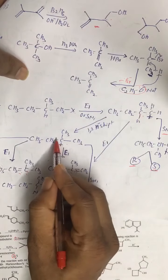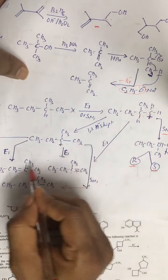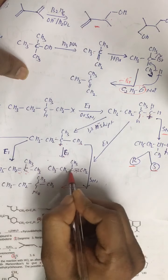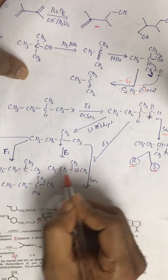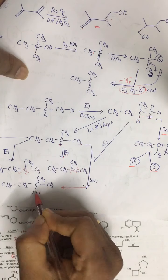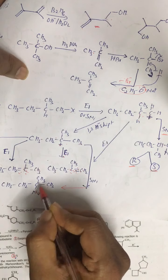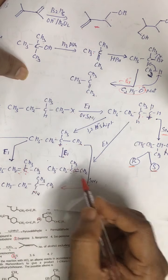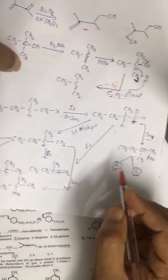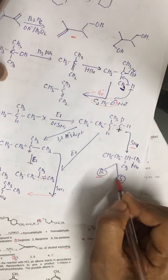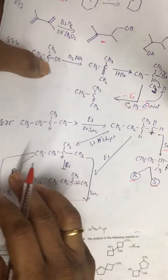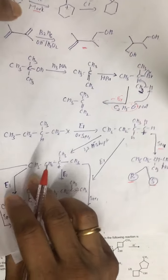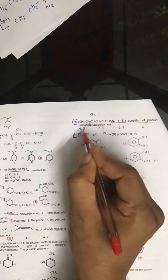So counting the products: this alkene (1), another alkene (2) — they will not exhibit geometrical isomerism. Product 3, and this will also not exhibit optical isomerism. So 1, 2, 3, and then 2 plus 3 equals 5. Total products should be 5 in my view. So I went for this option.